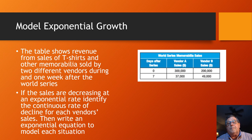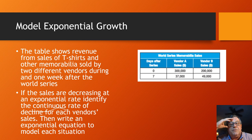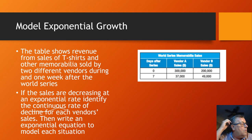Ah, yes, a word problem. So let's see what we have here. The table shows revenue from sales of t-shirts and other memorabilia sold by two different vendors during and one week after the World Series. If the sales at an exponential rate identify the continuous, and that continuous is an important word, rate of decline for each vendor's sales, then write an exponential equation to model each situation.